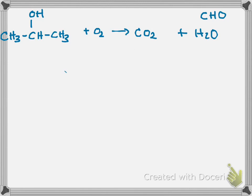I have three carbons on the left, so I need three on the right. I'll put a 3 in front of the CO2 so I have three. For hydrogens, how many do I have on the left? Eight. I need eight on the right, so I'll put a 4 in front of the H2O — that gives me my eight.